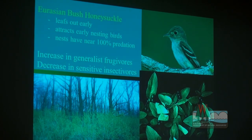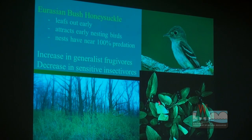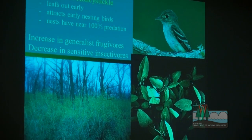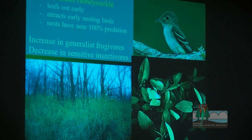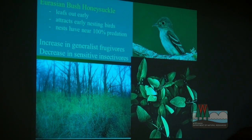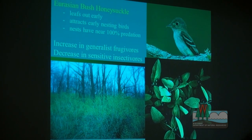There have been a number of studies on this. One at Morton Arboretum found near 100% mortality for birds that nested in honeysuckle. Other studies found it's primarily the early nesters that have high mortality. Another problem is that honeysuckle doesn't provide much in the way of insects or arthropods — it's hard to find any honeysuckle leaves chewed on by anything. However, honeysuckle does produce red berries that are great for frugivores that can handle high-carbohydrate fruits. So these plants increase frugivore populations but decrease sensitive insectivores like the Acadian flycatcher.